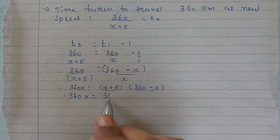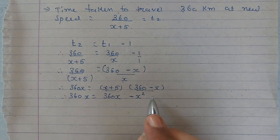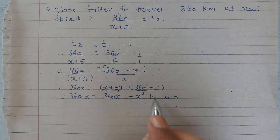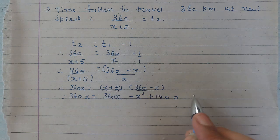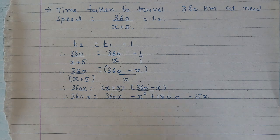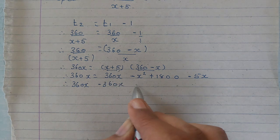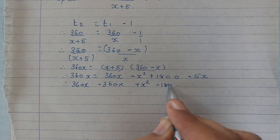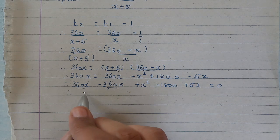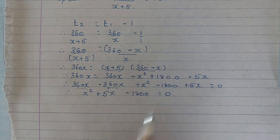Expanding RHS: x × 360 = 360x، x × (−x) = −x²، 5 × 360 = 1800، 5 × (−x) = −5x۔ اب سب کو LHS میں لے جاتے ہیں: 360x − 360x + x² − 1800 + 5x = 0۔ یہ دونوں 360x cut ہو جاتے ہیں اور ہمیں ملتا ہے: x² + 5x − 1800 = 0۔